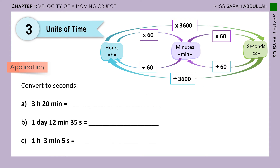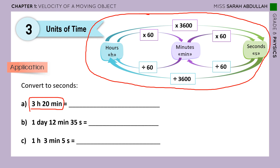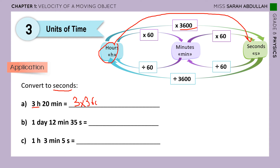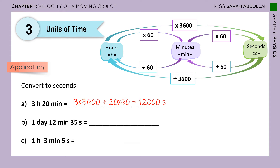Let's solve an application — convert to seconds. For part A: 3 hours and 20 minutes. Starting with 3 hours: to convert hours to seconds, multiply by 3,600, so 3 times 3,600. Plus 20 minutes: from minutes to seconds, multiply by 60, so 20 times 60. Using a calculator, the answer is 12,000 seconds.